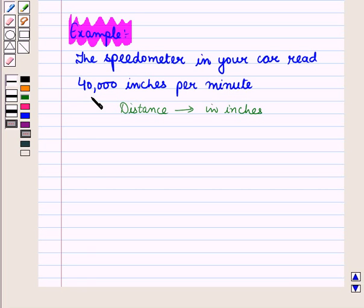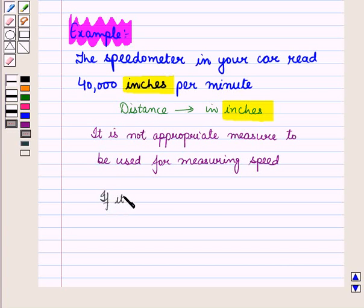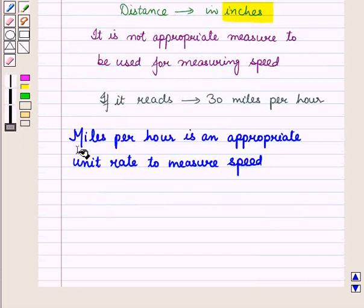But we can clearly judge that it is not appropriate measure to be used in measuring speed. The speedometer in inches does not give us a good idea of the speed of the car, but if it reads 30 miles per hour, then you have a better idea of how fast you are traveling. We can clearly see that miles per hour is an appropriate unit rate to measure speed.